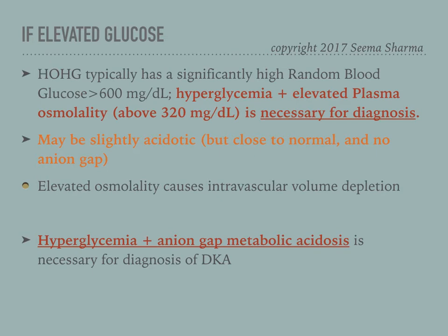To round this out — and reiterating the point from the beginning — once you make your differential, don't go back to the vignette. We have stereotypes of different types of diabetes: for example, type 2 is associated with obesity. But if the patient's weight in the vignette is close to normal, don't make your differential based on that. Follow your differential and analyze the lab results according to what is defined and necessary for each diagnosis.